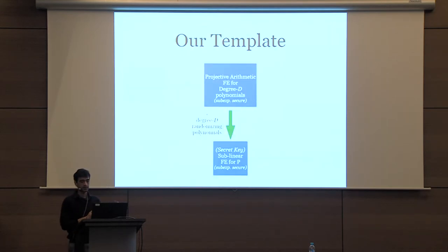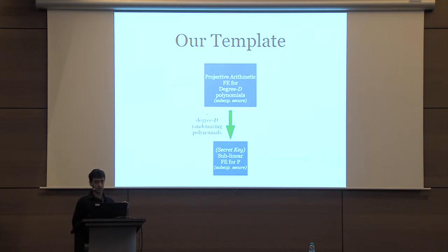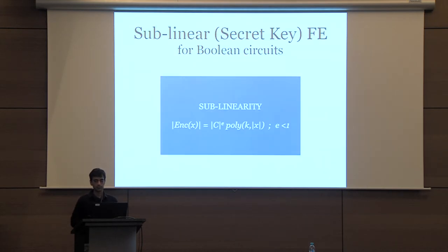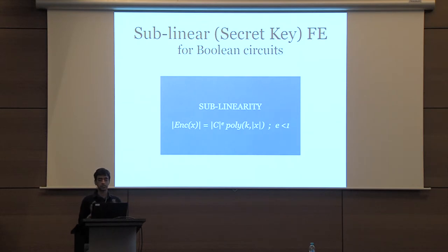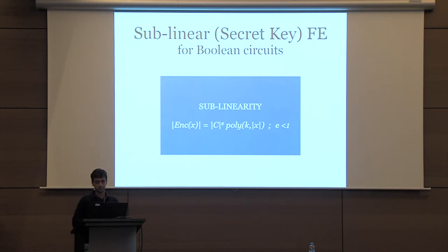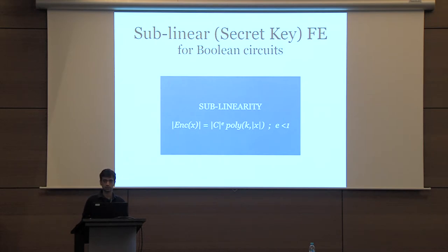Now we've defined PAFE. Let's see how to construct sublinear secret-key FE from PAFE for degree-d polynomials and degree-d randomizing polynomials. The sublinearity property says that the time to encrypt a message X should be sublinear in the circuit size, times some polynomial in the security parameter and the message length.